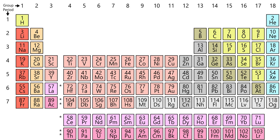Elements with no stable isotopes have the atomic masses of their most stable isotopes listed in parentheses. In the standard periodic table, the elements are listed in order of increasing atomic number Z, the number of protons in the nucleus of an atom. A new row is started when a new electron shell has its first electron. Columns are determined by the electron configuration of the atom; elements with the same number of electrons in a particular subshell fall into the same columns — for example, oxygen and selenium are in the same column because they both have four electrons in the outermost P subshell.